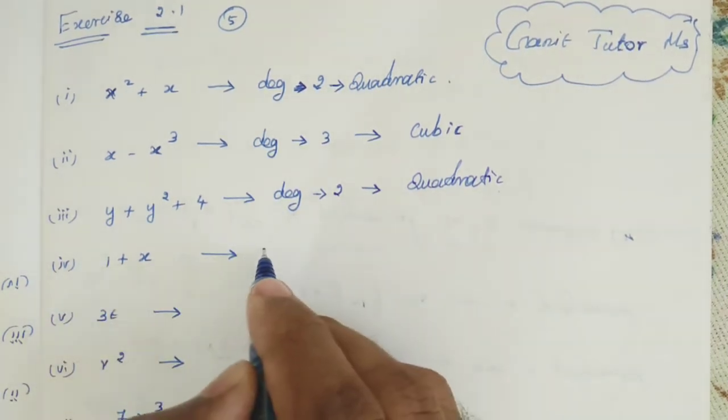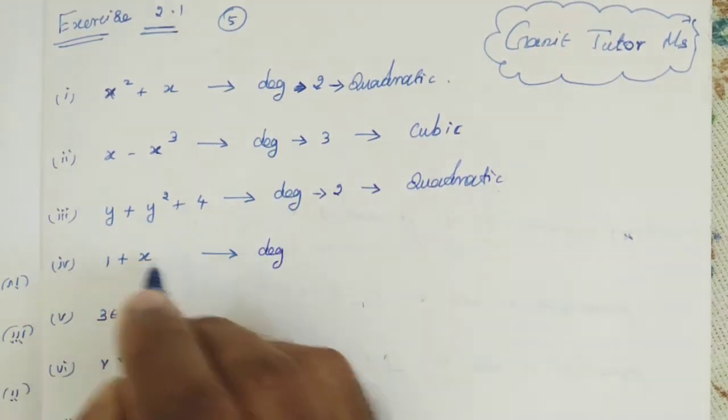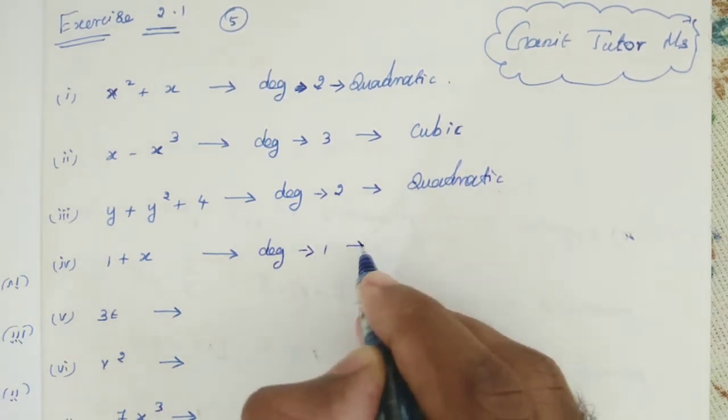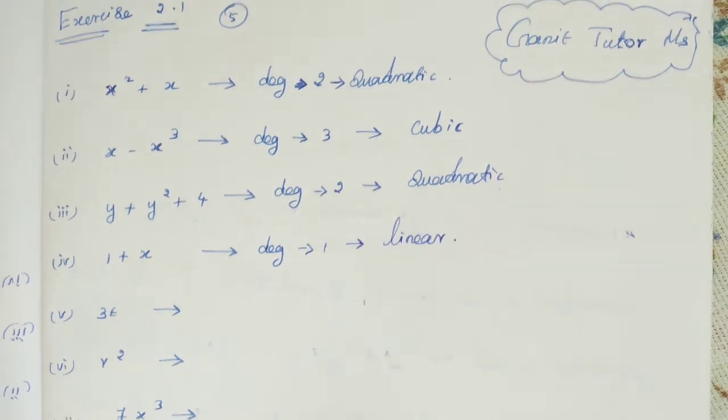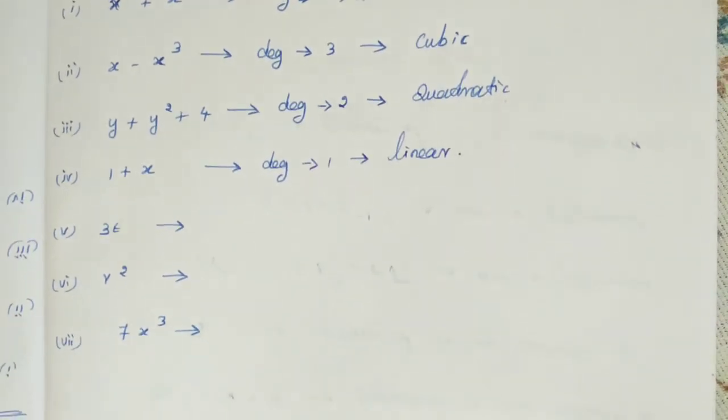Next step. 1 plus X. X power is 1. So it is degree 1. It is linear polynomial. Clear?